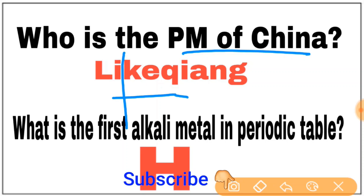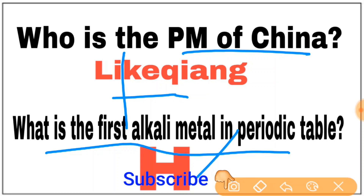What is the first alkali metal in the periodic table? The first alkali metal in Group 1 is Lithium, followed by Sodium and Rubidium.